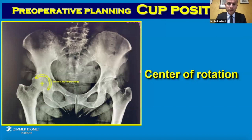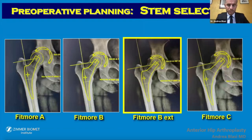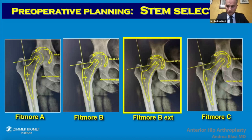The first step in planning is to find the cup position and determine the new center of rotation. Then we choose the right stem. We can see Fit More A, Fit More B, B Extended, and C — and only Fit More B Extended is suitable to reach the new center of rotation and reconstruct the joint.